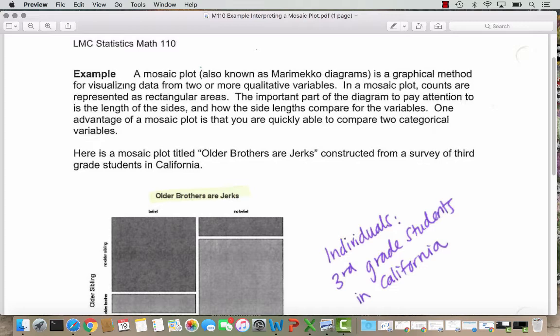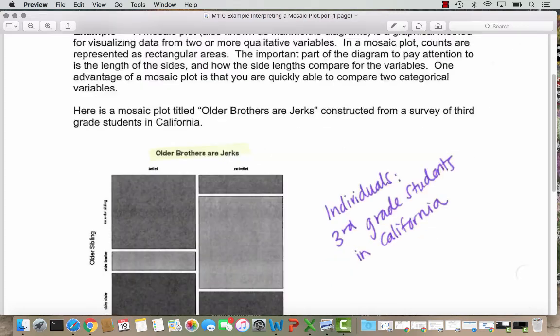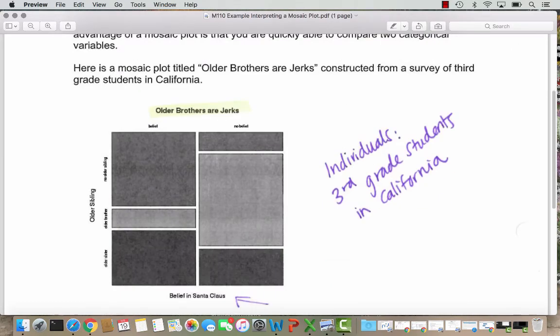Here's a mosaic plot called Older Brothers Are Jerks constructed from a survey of third grade students in California. So the individuals in this study, as I've written over here in my note, are third grade students in California.